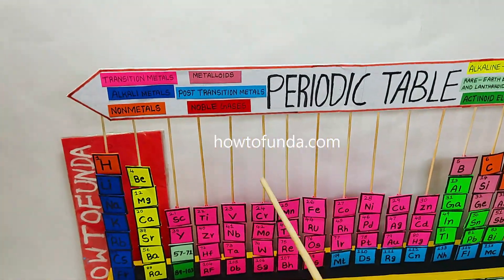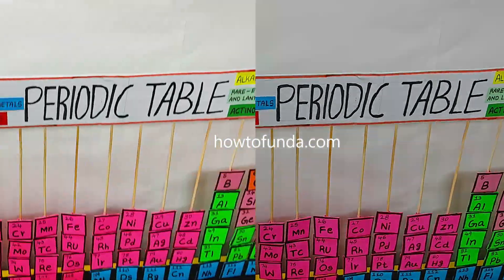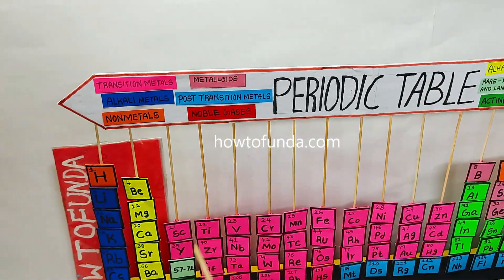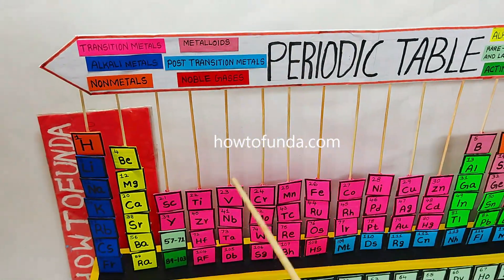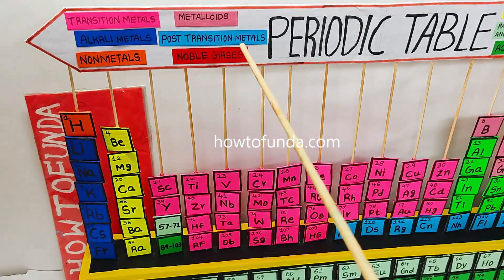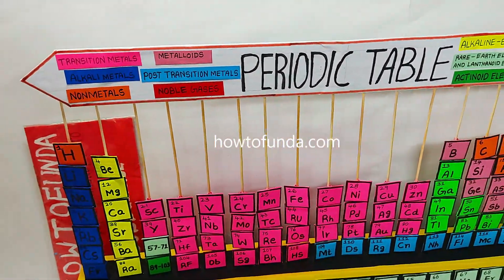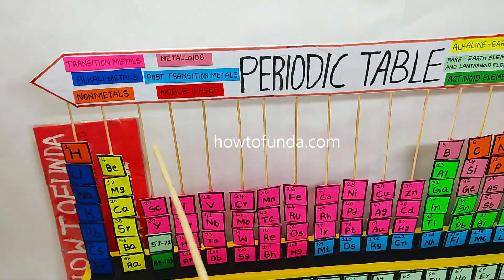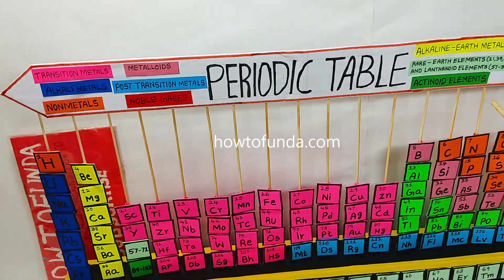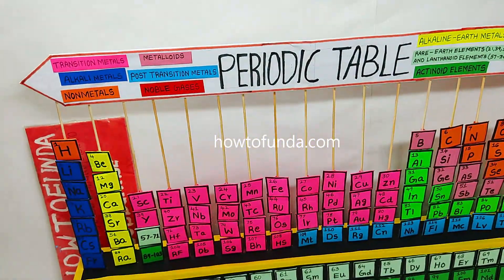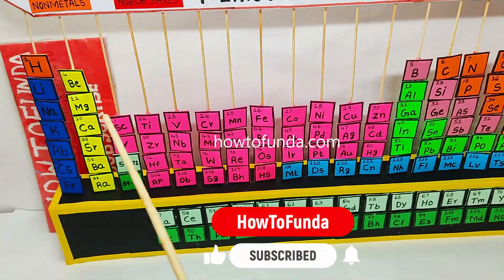In the vertical columns there are 18 groups. If you can see, there are 18 columns. Each group has similar chemical properties, and that is the way we are representing in this periodic table.